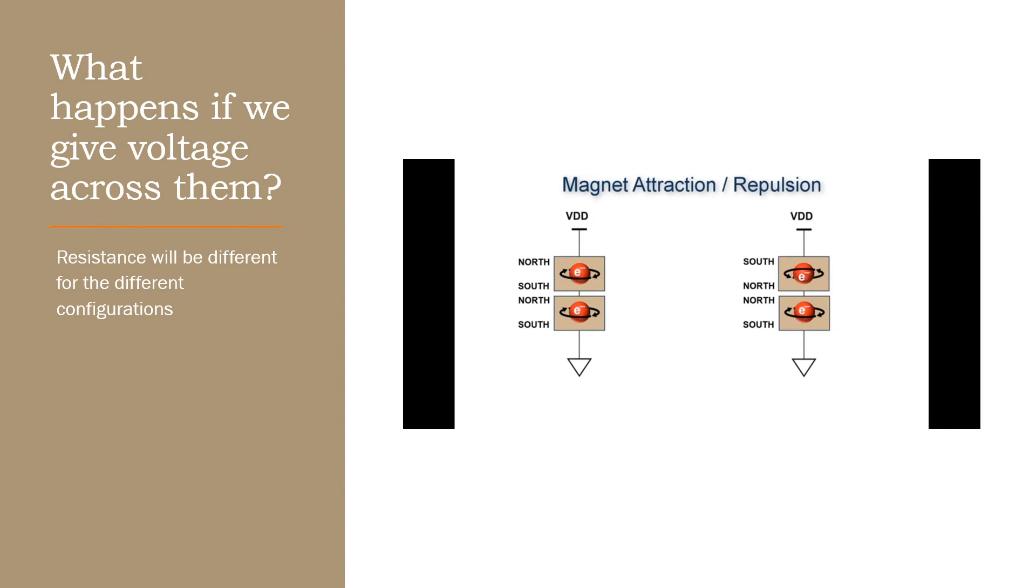So what happens if we put the same configuration in an electric circuit? It behaves the same way. North-South North-South configuration will have less resistance and South-North North-South configuration will have higher resistance.